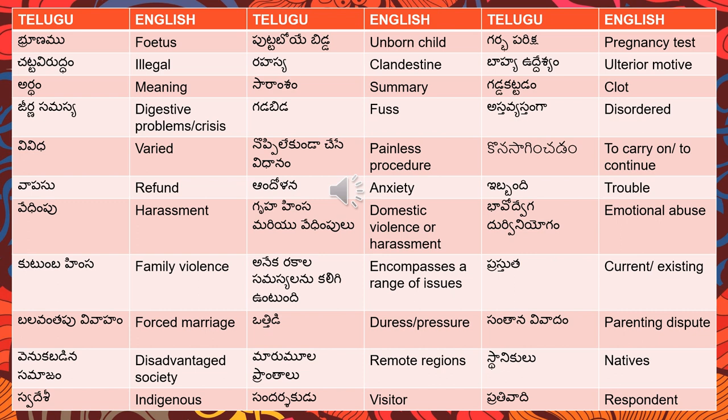Going ahead: 'unborn child' — putaboyya bitta. 'Pregnancy test' — garbha pariksha; pariksha means test. 'Illegal' — saata viruddham, that means against the law. 'Clandestine,' meaning secret — rahasya; all of these can be translated as rahasya.